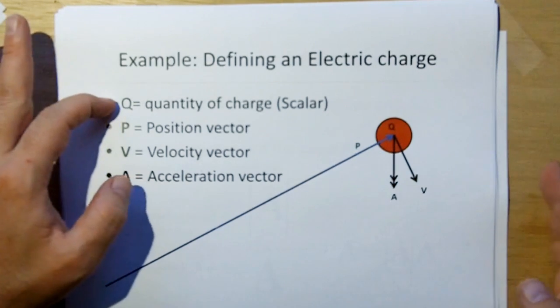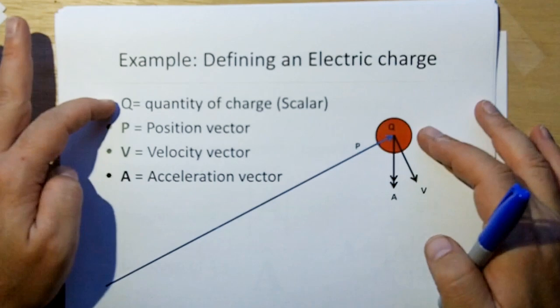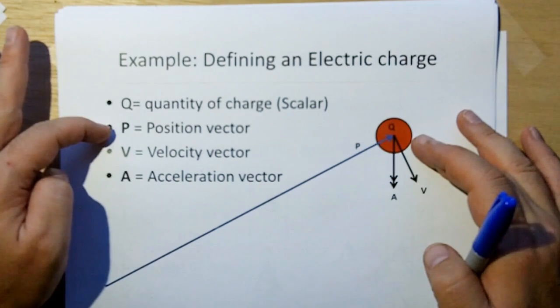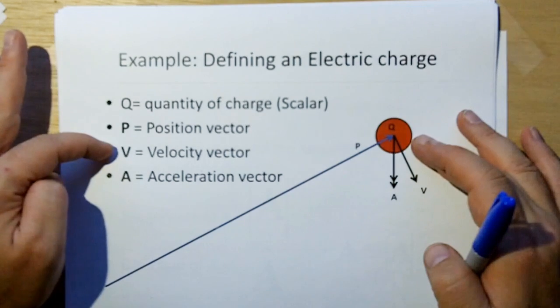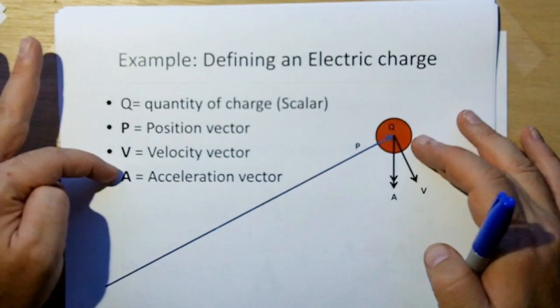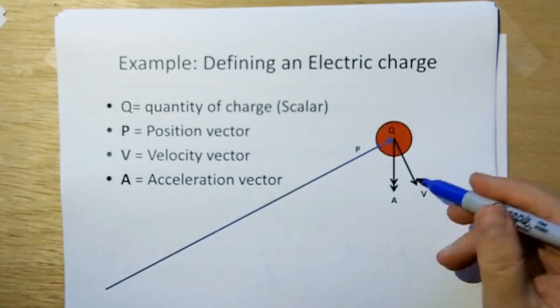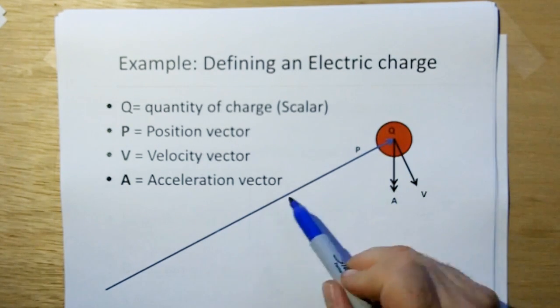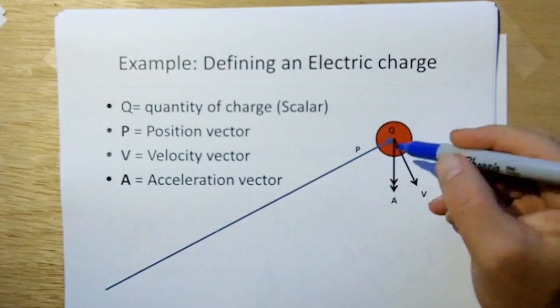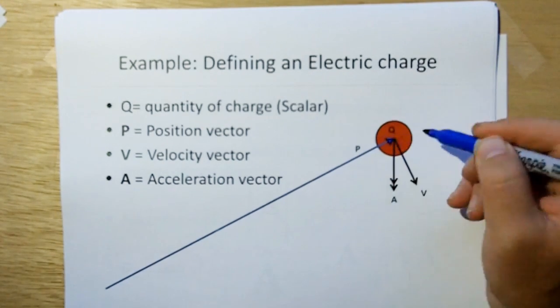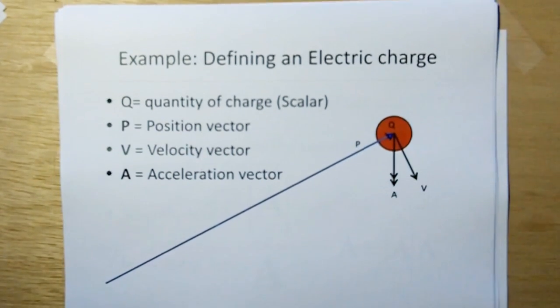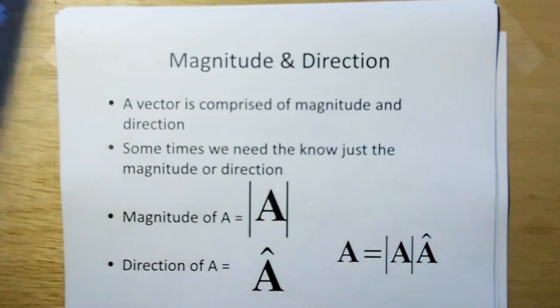So later we're going to define, not in this part of the course, when we get back to ethereal mechanics, we're going to define electric charge in terms of vectors, where q is the quantity of a charge and that's a scalar, and we're going to define scalars in a bit. P is the position of the charge, v is the velocity of the charge, and a is the acceleration of the charge. Again, velocity is represented with a single head arrow, acceleration is represented with a double open head arrow. Where position, I use a single head arrow, but I think I use a closed head arrow like that. So that's how we're going to represent charges when we get back to ethereal mechanics. We're not going to use that now.